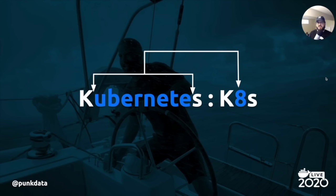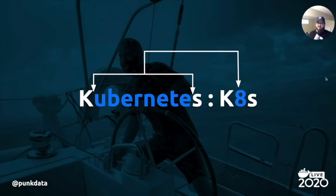Before we get into Kubernetes and Docker, I wanted to explain the term K8s — I'm going to be using it quite a bit. The K is the first letter of Kubernetes, the 8 stands for the eight characters in between, and the S is the last letter. So the acronym is K8s — really simple.